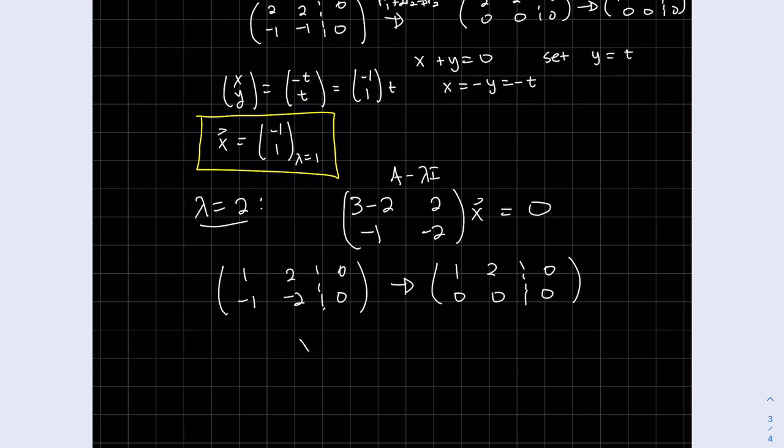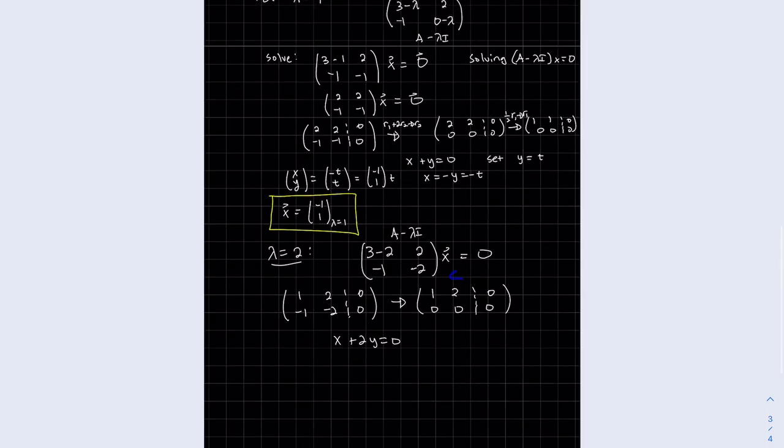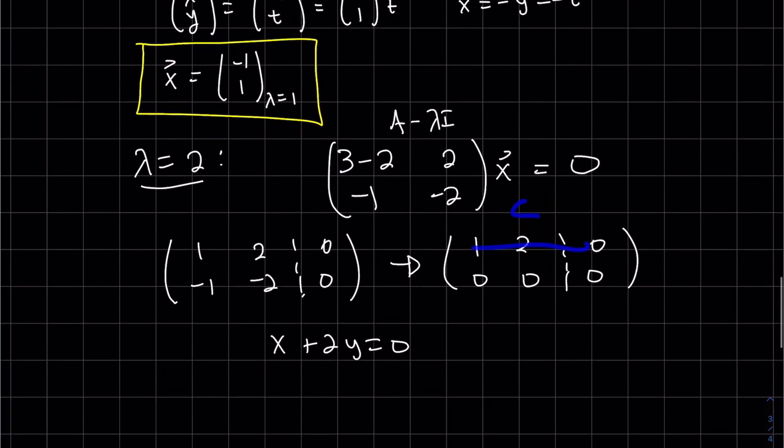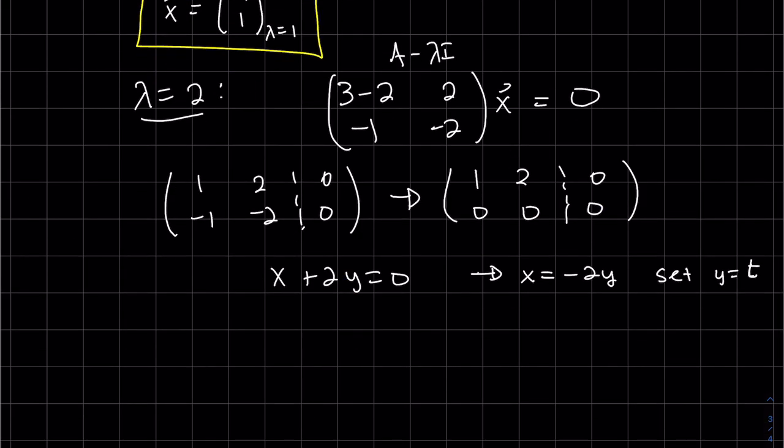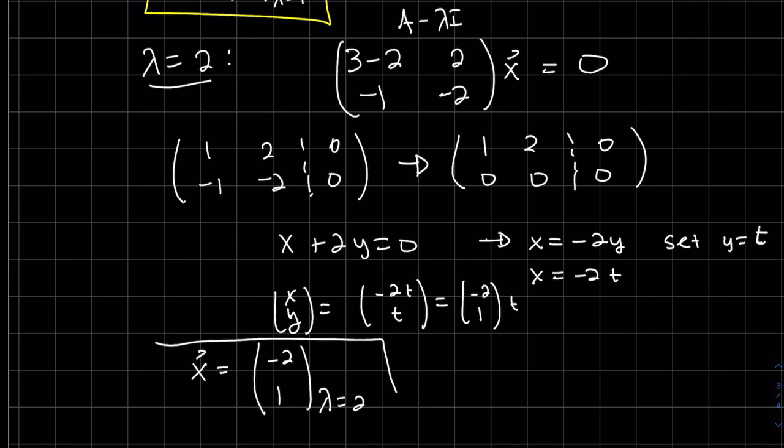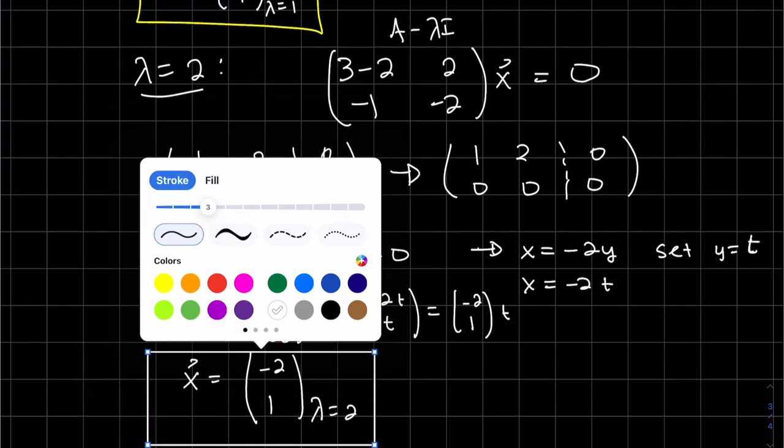Talk about that more in a sec. And here's my solution. We'll set y equal to t and then there's minus two t, y is t, and that's my second eigenvector for corresponding eigenvalue of two.